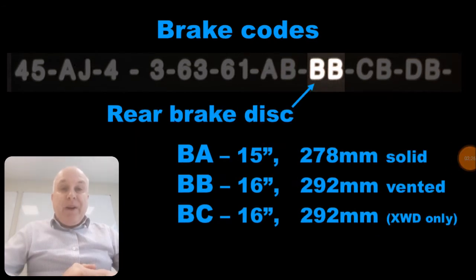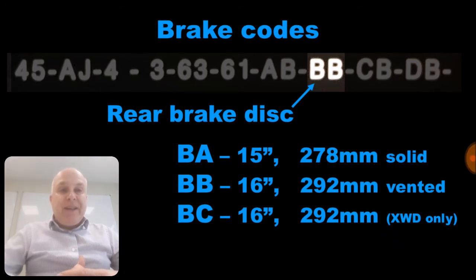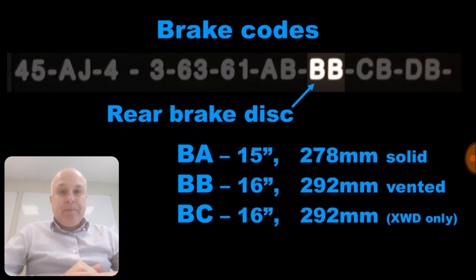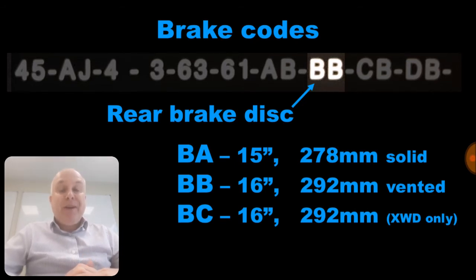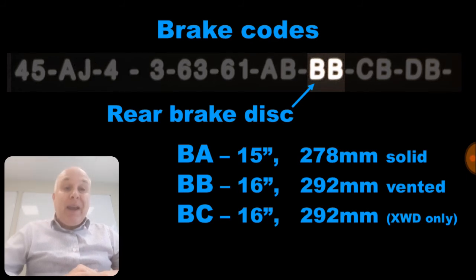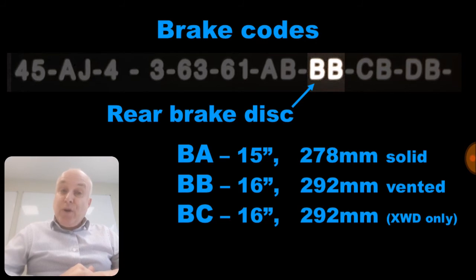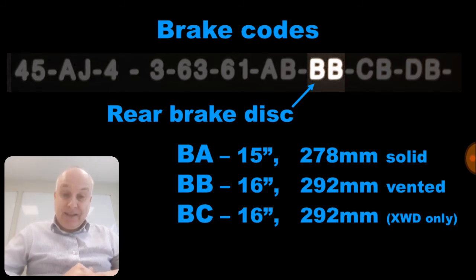The rear brake disc code starts with a B and is made up of letter pairs BA, BB, and BC. Code BA is for the 15-inch system with 278 millimeter solid discs, and codes BB and BC are for the 16-inch system with 292 millimeter vented discs.